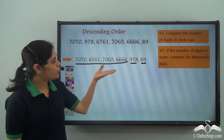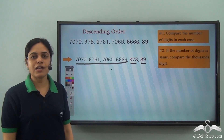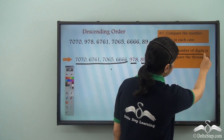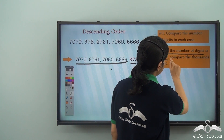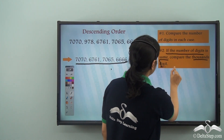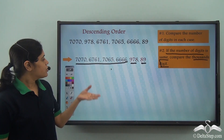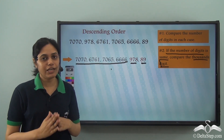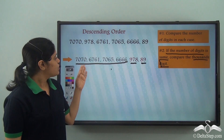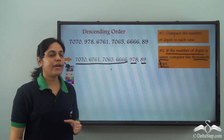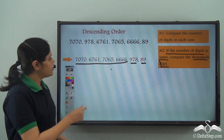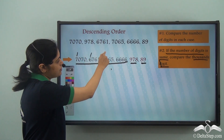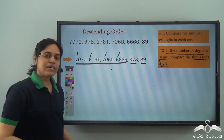Now how do we arrange these numbers? Rule number two says: if the number of digits is the same, compare the thousands digit. In these numbers I have four digits in each, so I need to compare the thousands digit. The thousands digit is seven here, six here, seven here, and six here.